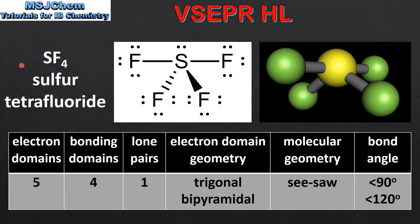The next example is SF4, which is sulfur tetrafluoride. If we look at the Lewis structure we can see there are 5 electron domains around the central atom. 4 of these are bonding domains and we have 1 lone pair of electrons. The electron domain geometry is trigonal bipyramidal. The molecular geometry is seesaw, and the bond angles are less than 90 degrees and less than 120 degrees.